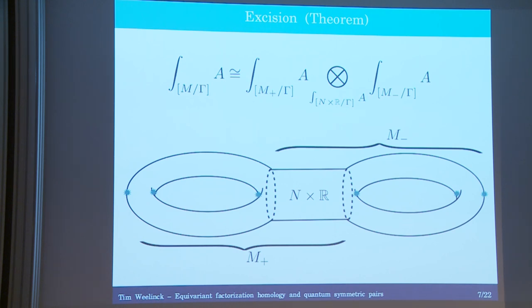That's the abstract setup — and in fact we don't need to think about frames specifically, you could do other structure groups. But now let's move to a specific example, namely the one where these quantum symmetric pairs show up.